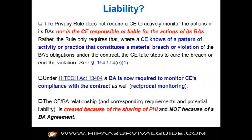What's the liability? The privacy rule and security rule do not require a covered entity to actively monitor the actions of its business associate, nor is the covered entity responsible or liable for the actions of its business associate — with some caveats. Rather, the rule only requires that where a CE knows of a pattern or activity or practice that constitutes a material breach or violation of the BA's obligation under the contract, the CE must take steps to cure the breach or end the violation. The essence of the rule is: you can't look the other way.